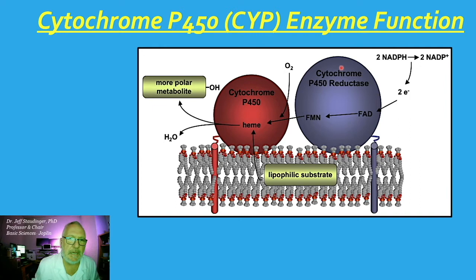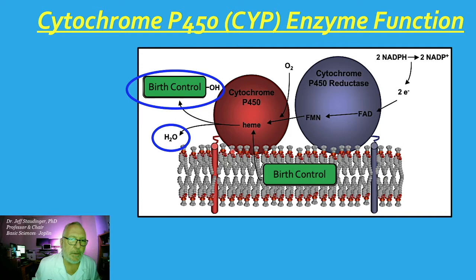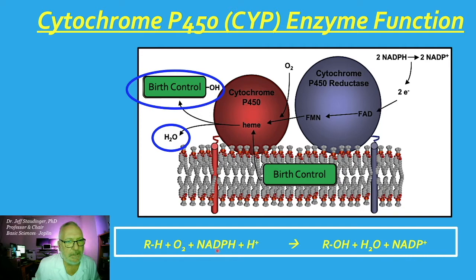This reductase takes two electrons from NADPH from the pentose phosphate pathway, moves these electrons through the system, passing them to heme, where they combine with molecular oxygen to produce water and a more polar hydroxylated metabolite. In our example, birth control, an OH group gets stuck on the steroid and water is produced. Any drug combines with oxygen and NADPH to produce a hydroxylated form of the drug and water.